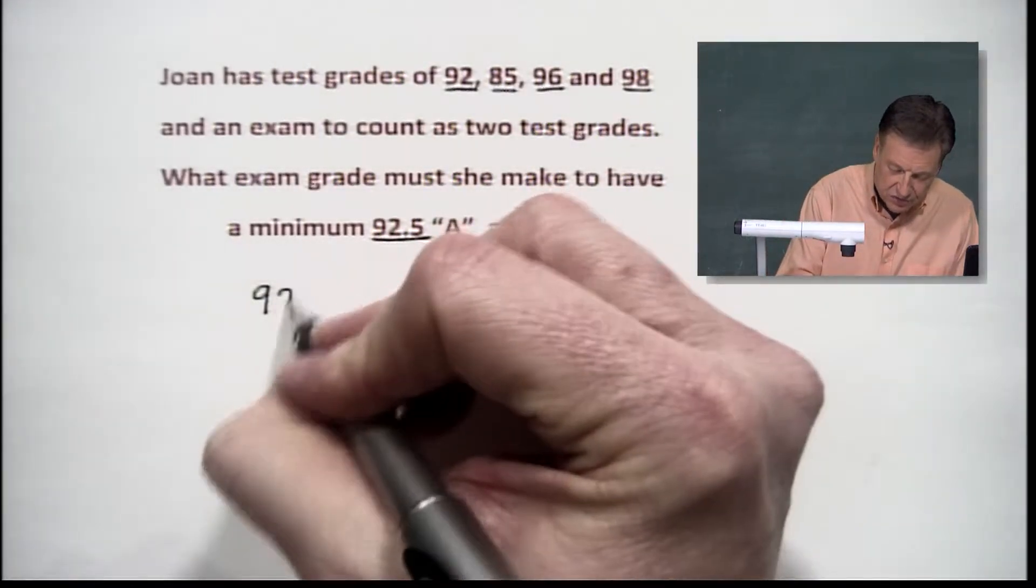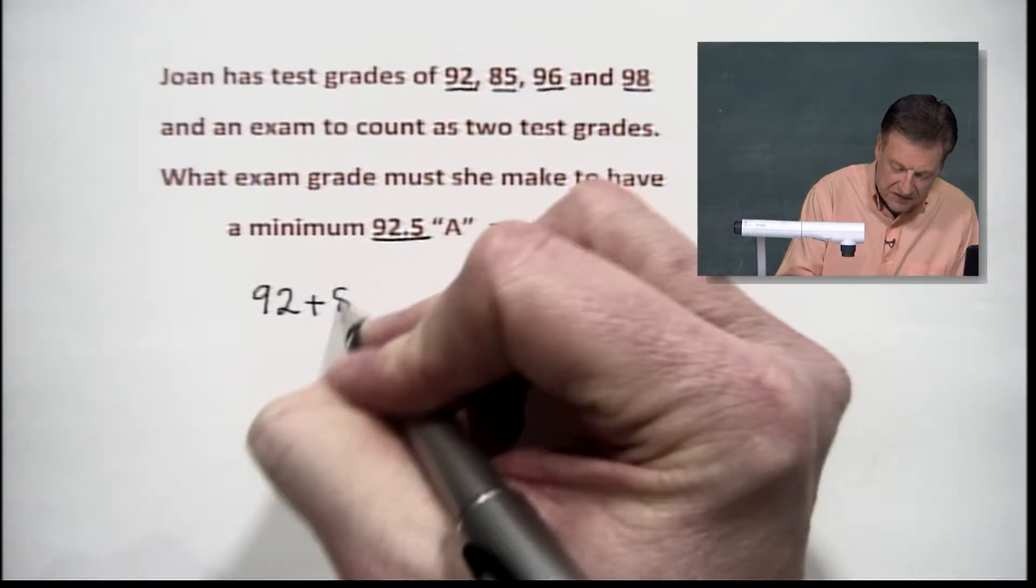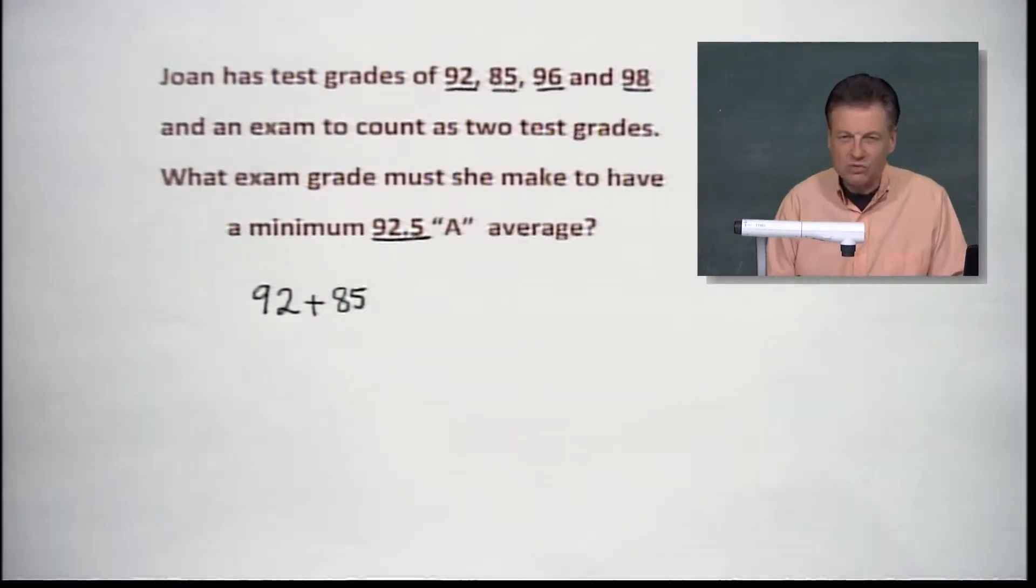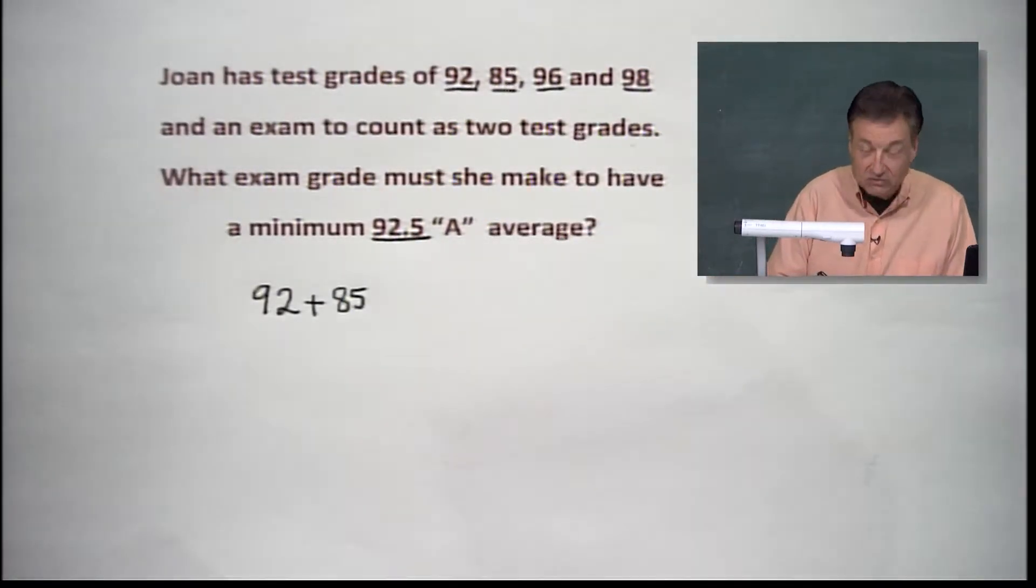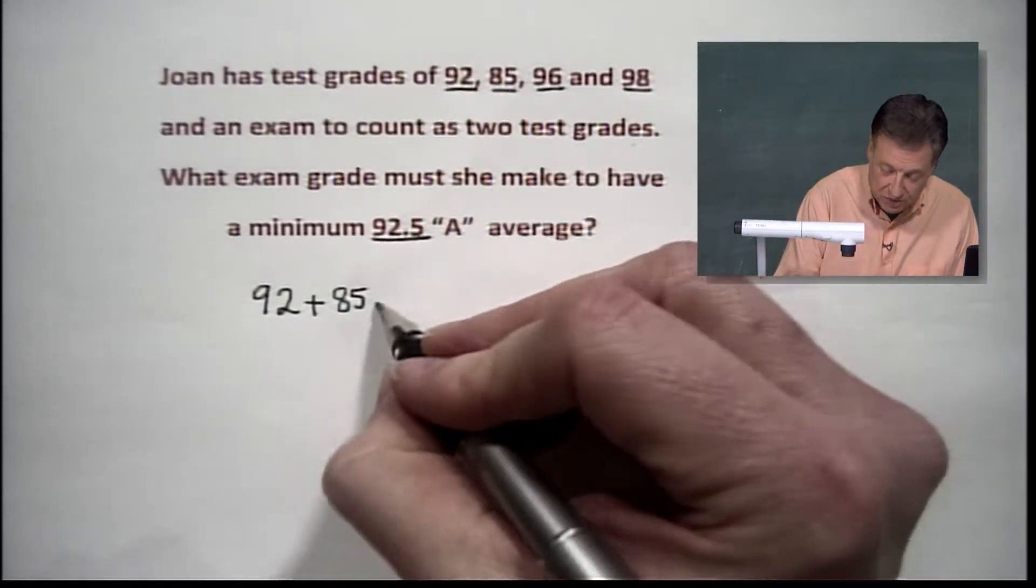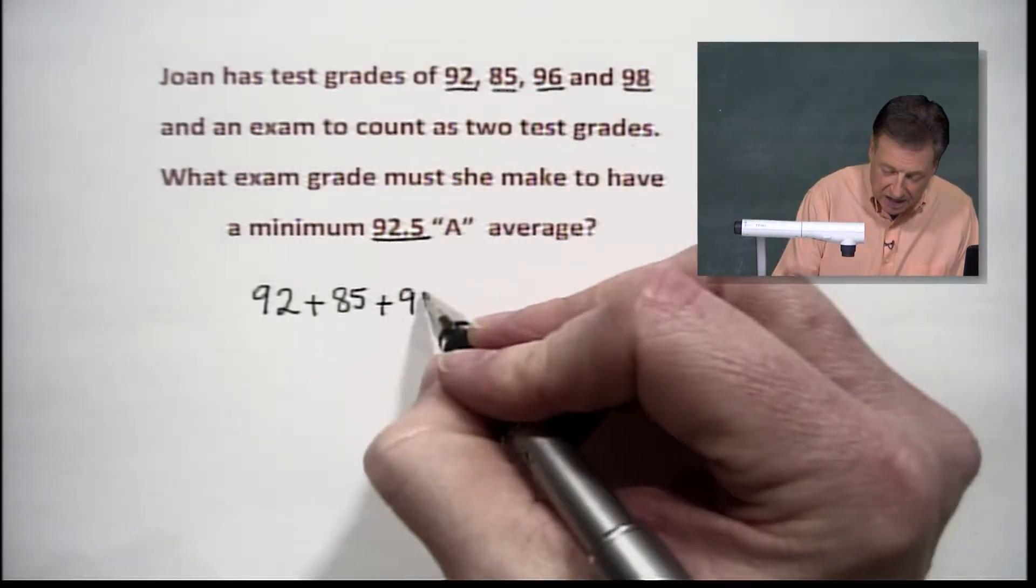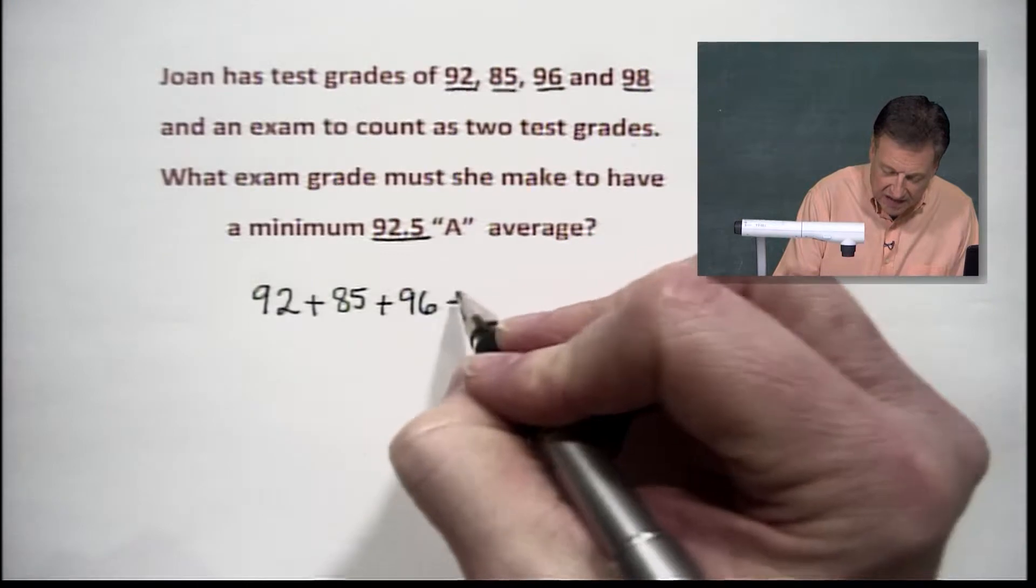We're going to take 92, we're going to add 85. Had a little rough day there it looks like, but Joan's a pretty good student, but she rebounds pretty well here. 96 and a 98.